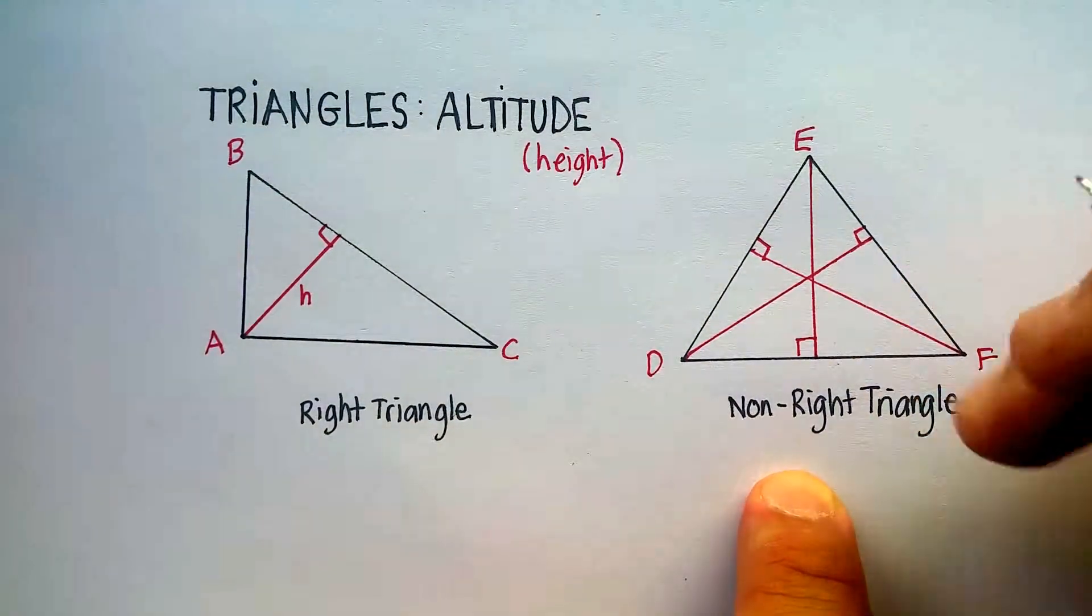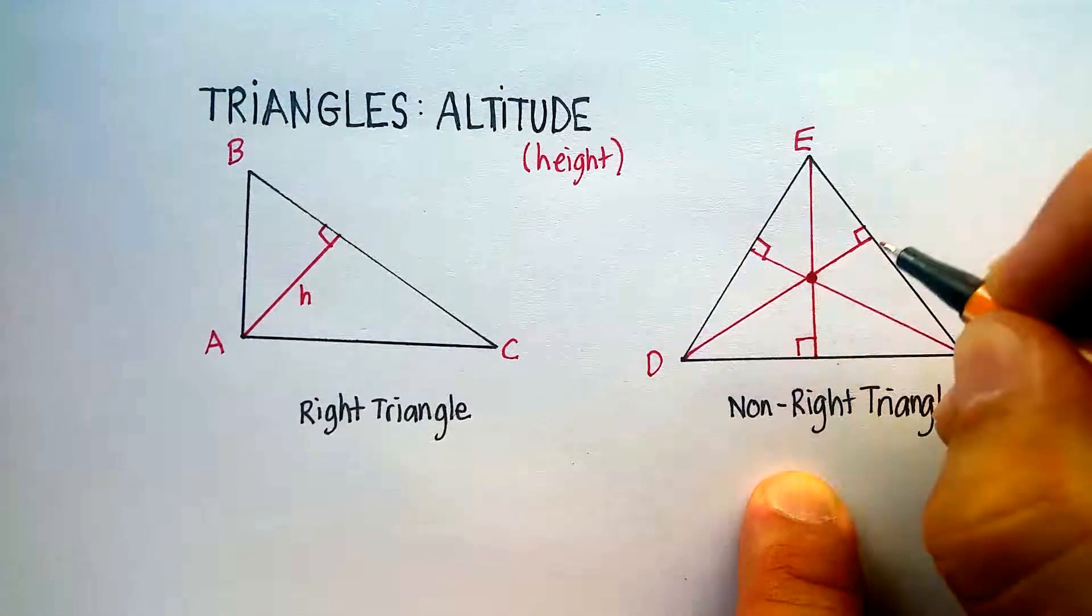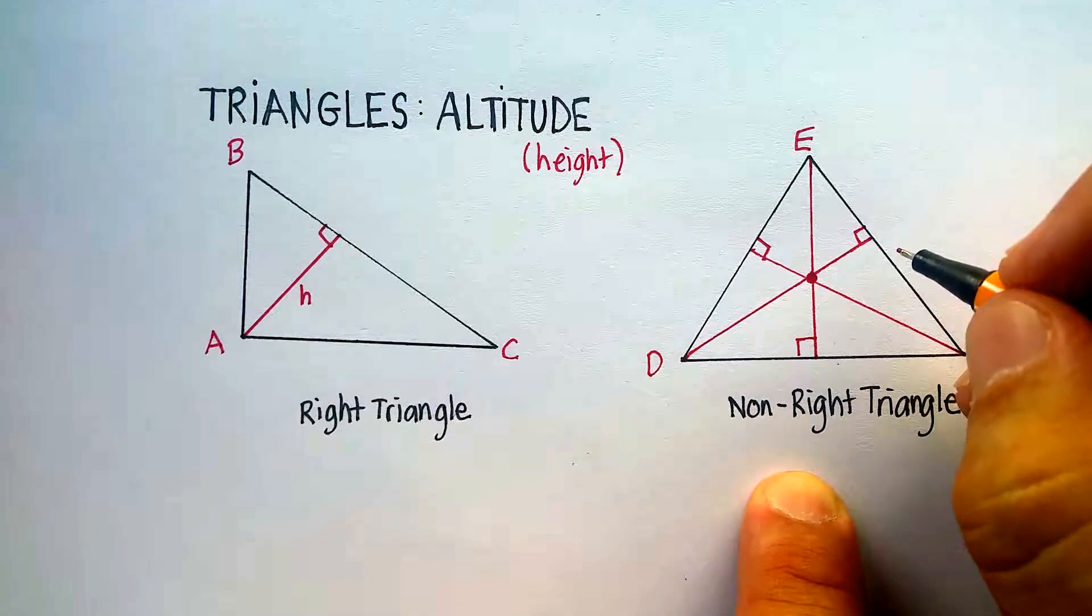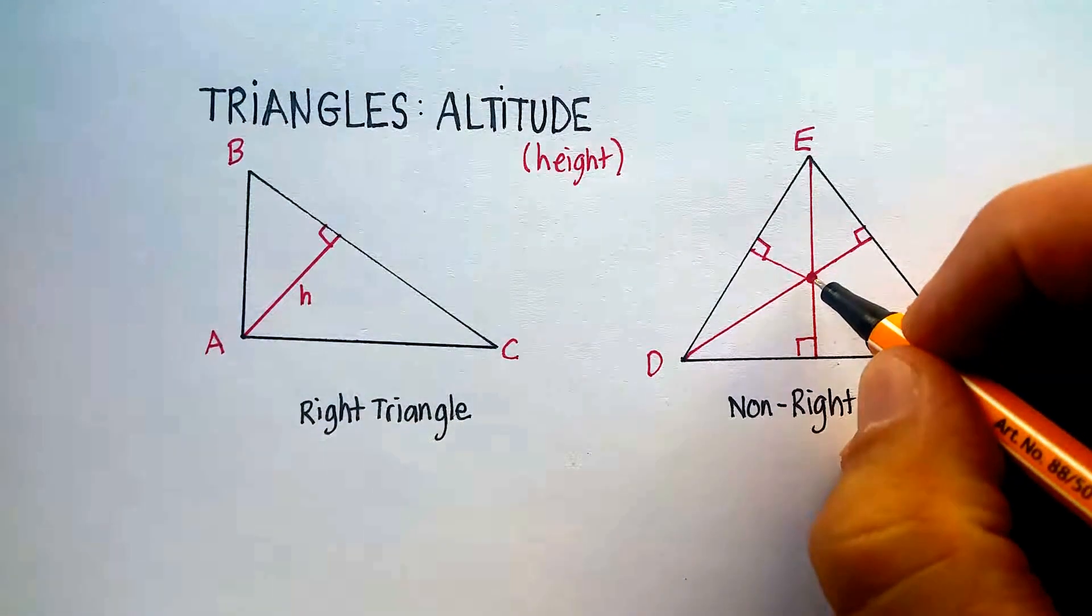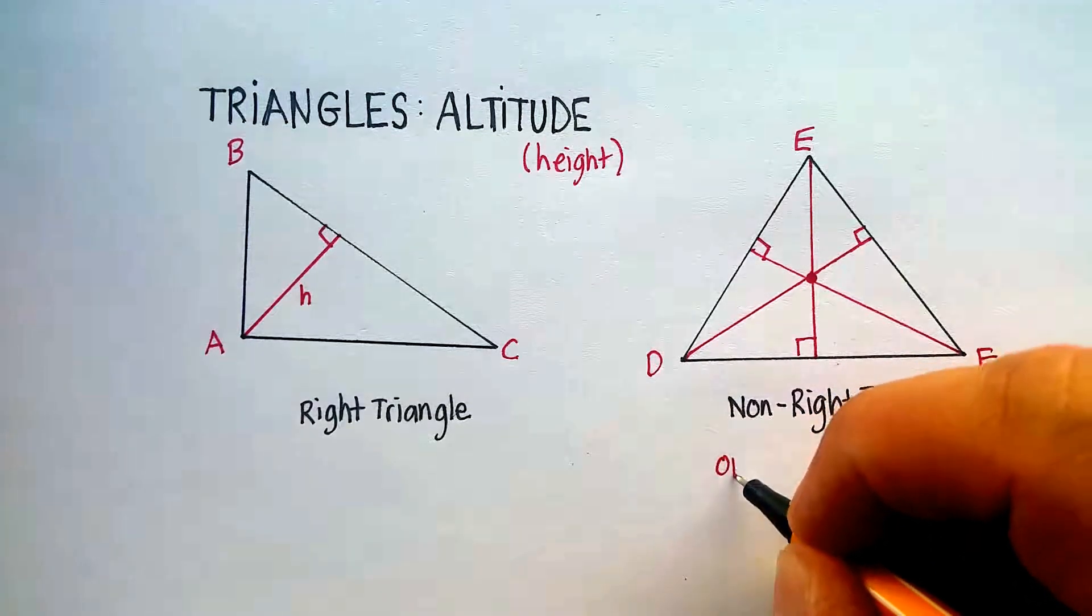And then the same thing right here. So let's make sure we do that. And I want to tell you about some of the characteristics that occur. Let's start with the non-right triangle. If I were to draw it correctly, all three of those altitudes or heights meet in a point, an intersection in the point, called the orthocenter.